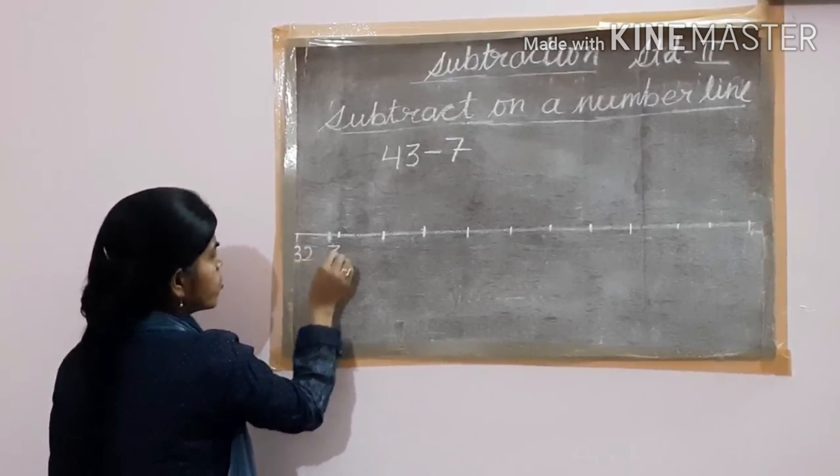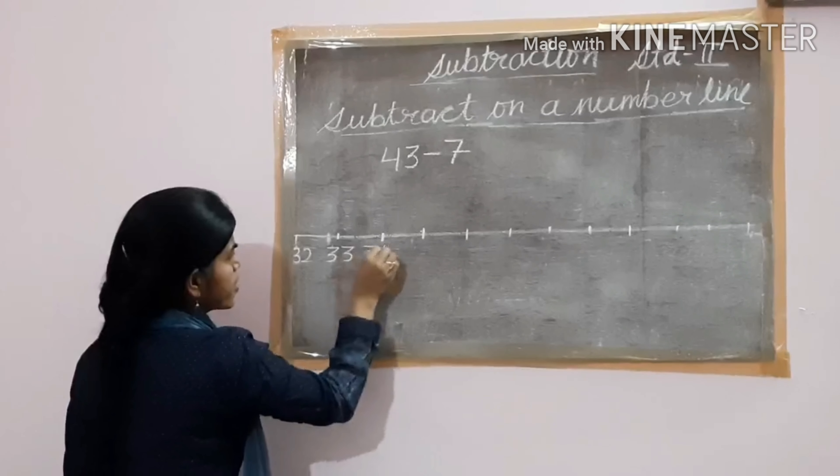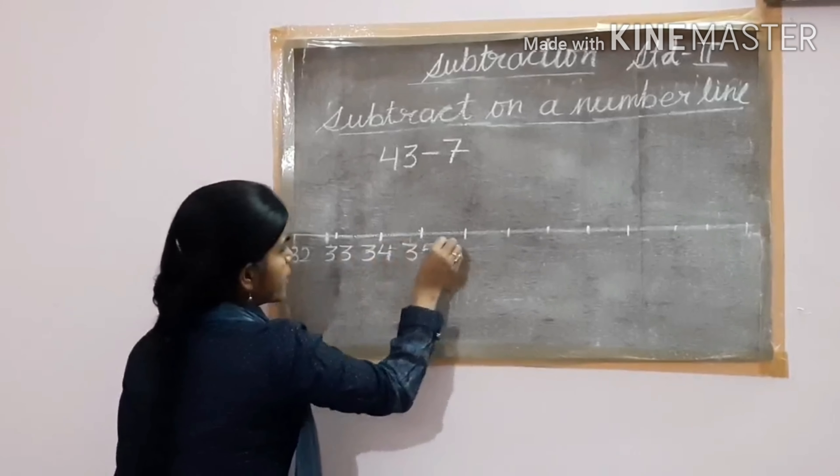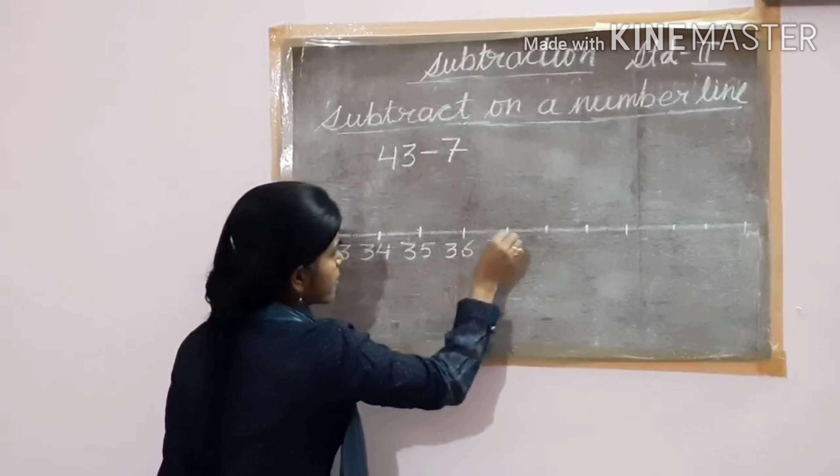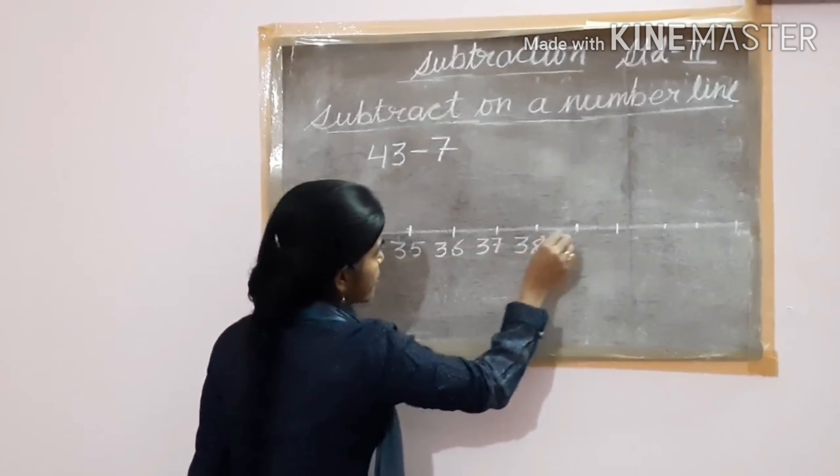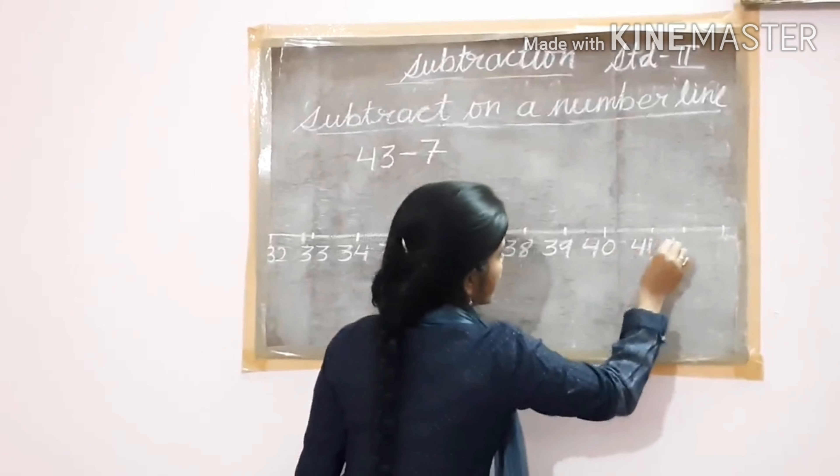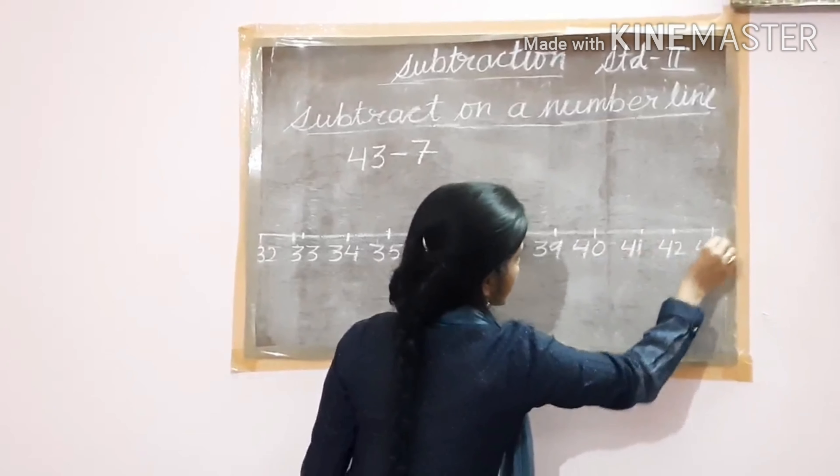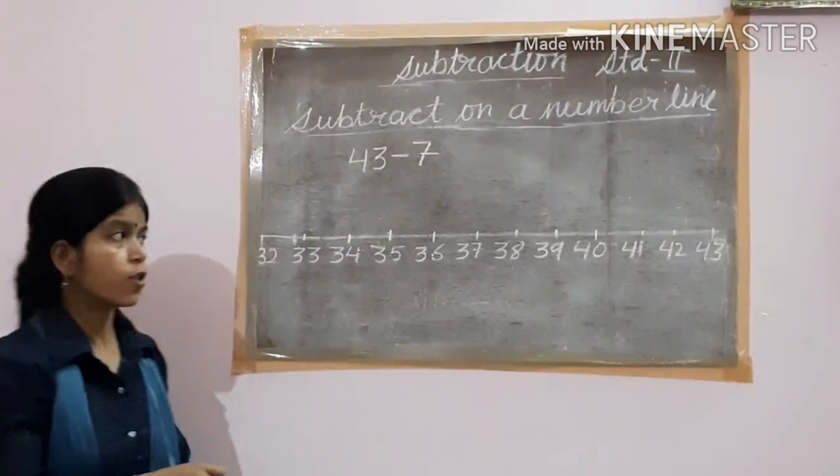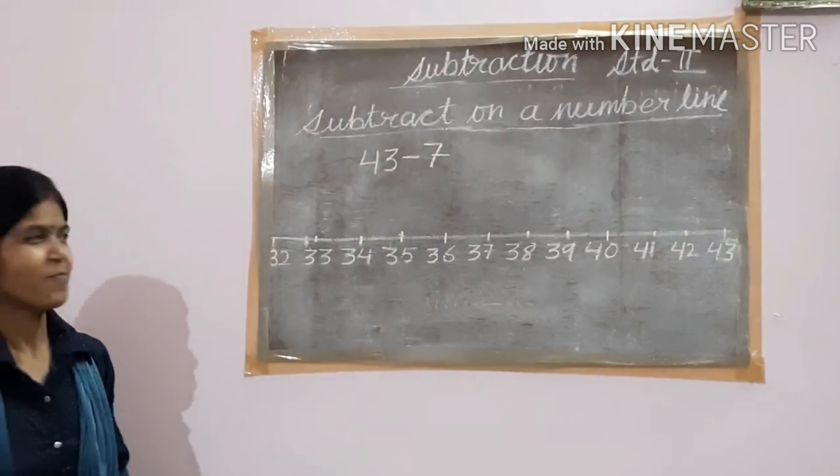Then write: 30, 31, 32, 33, 34, 35, 36, 37, 38, 39, 40, 41, 42, 43. Luckily, I got 43 number there in the line.